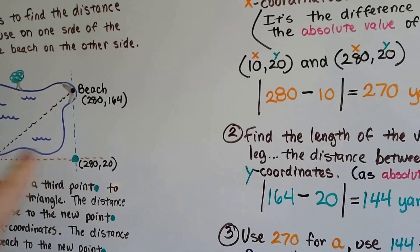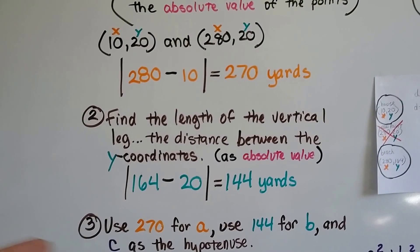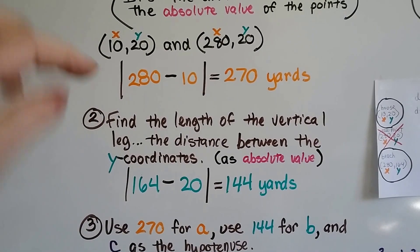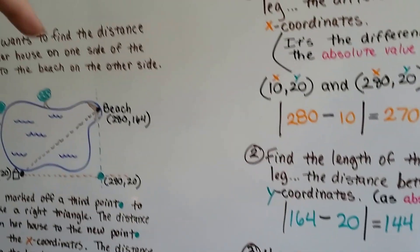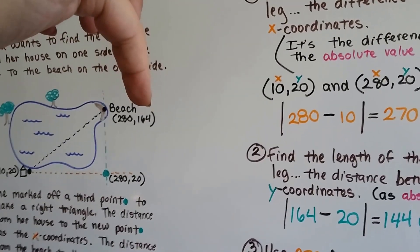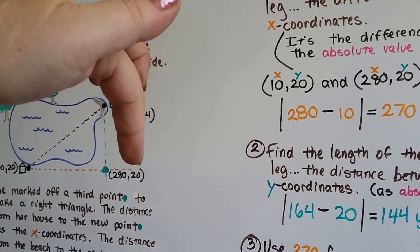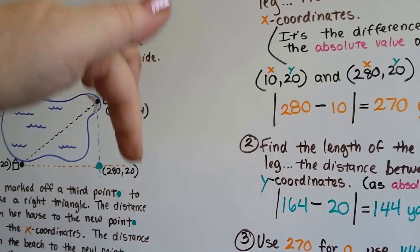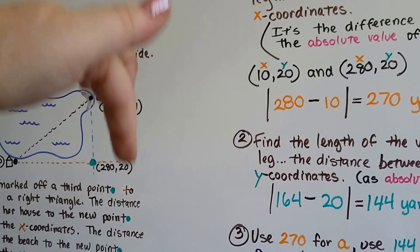So now we've got a, don't we? We find the length of the vertical leg, that's absolute value, and we look and we see that the y is 164 and the y is 20. Because these are the y-coordinates, the second one.